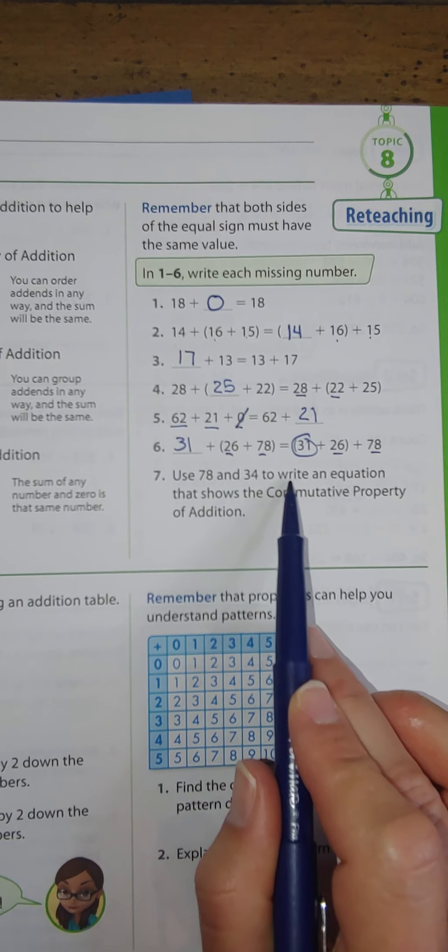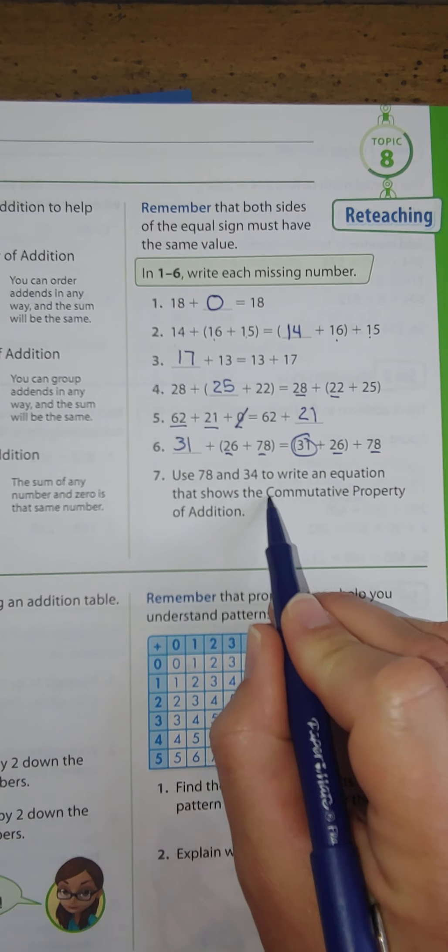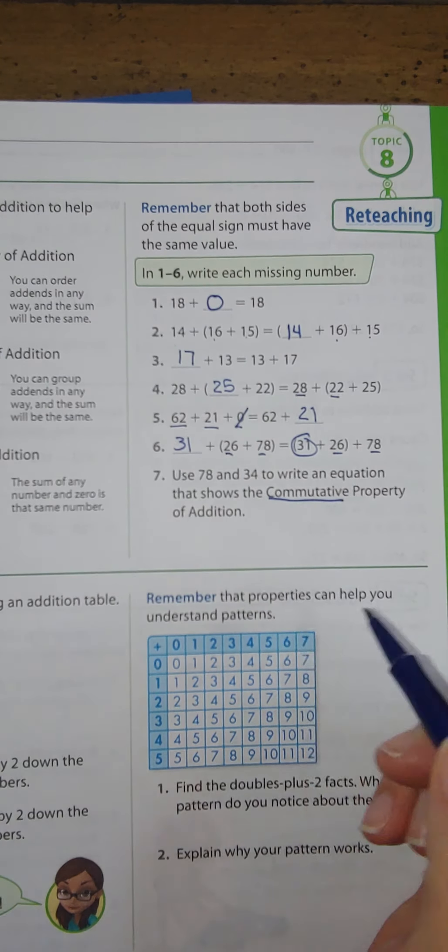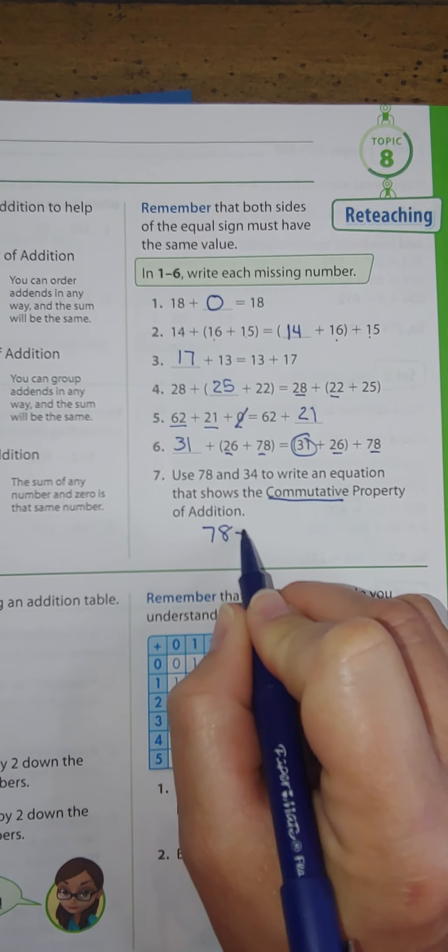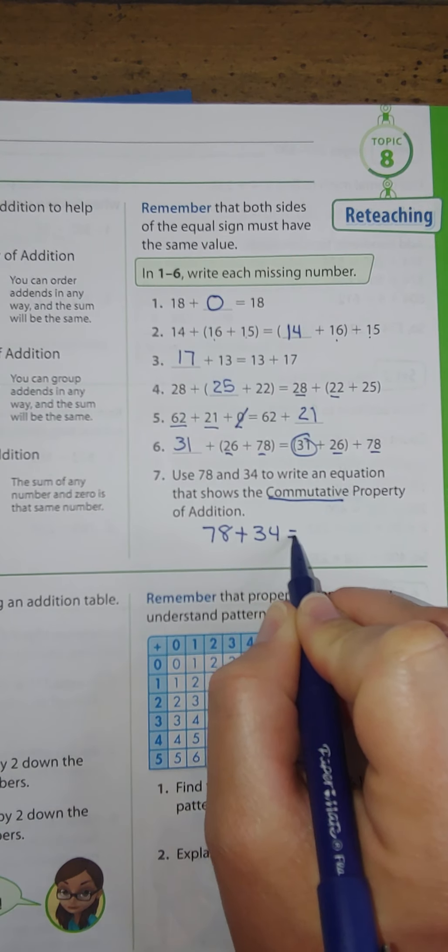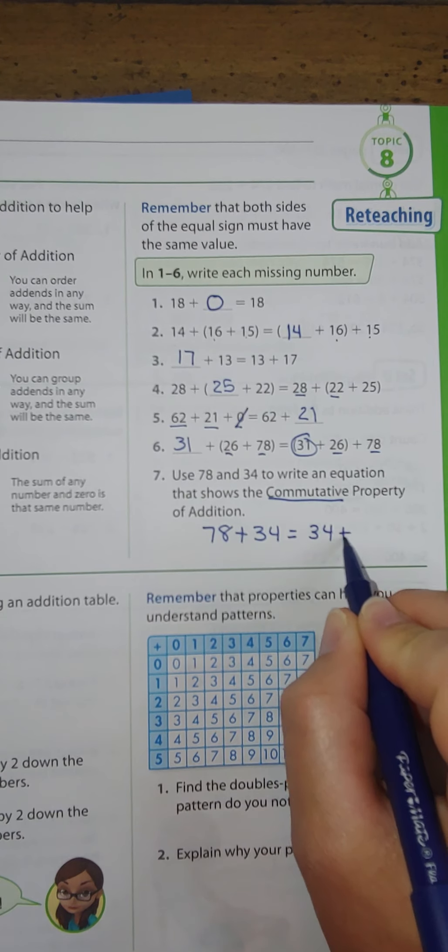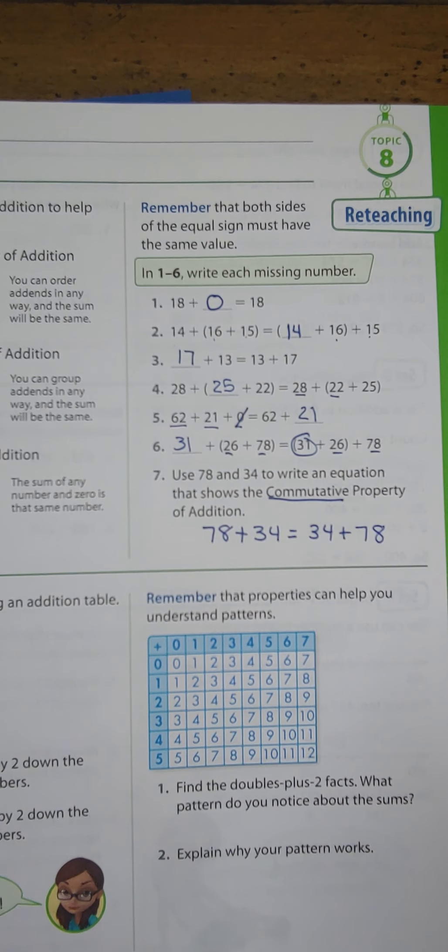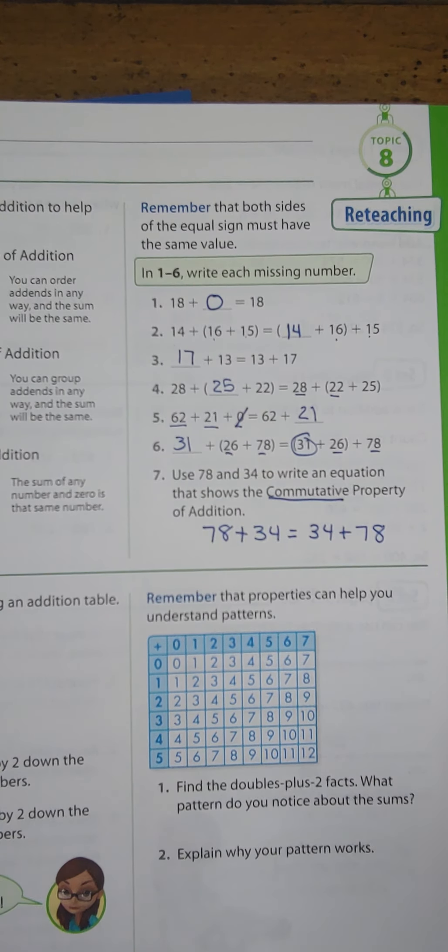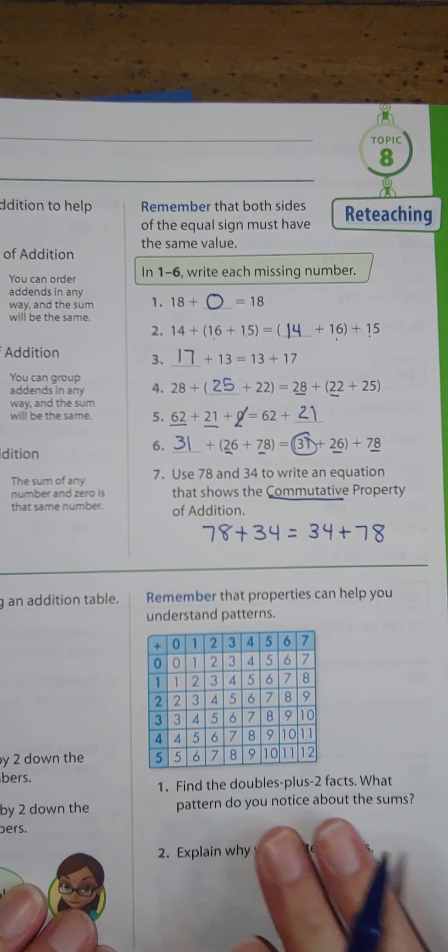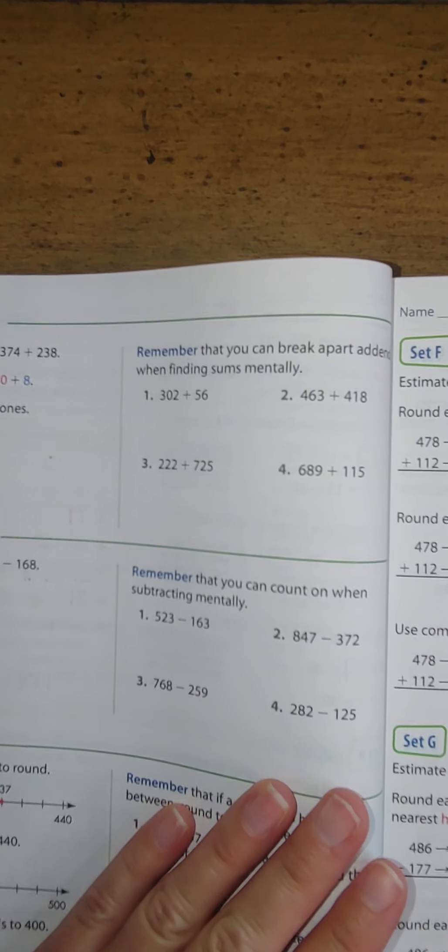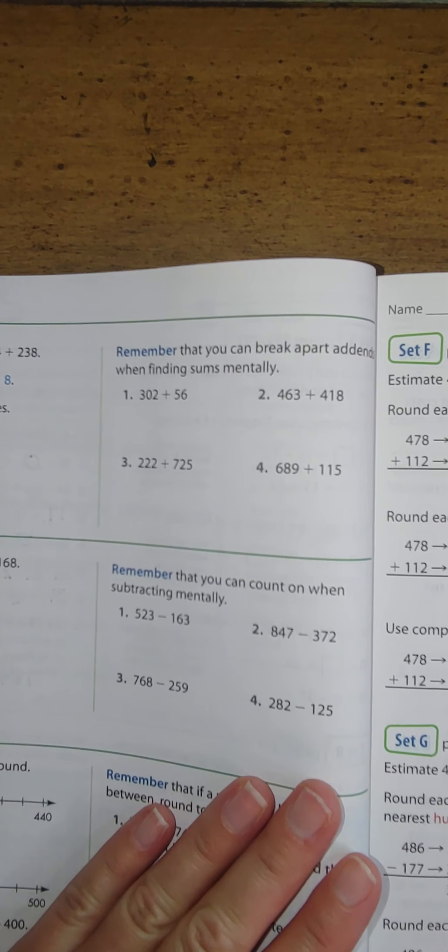Use 28 plus 34 to write an equation that shows the commutative property, that back and forth. So I'm going to say 78 plus 34 is the same as 34 plus 78. That was a review of our properties. You do not need to do the bottom portion. We skipped that lesson for now. Go ahead and turn your page to page 324.